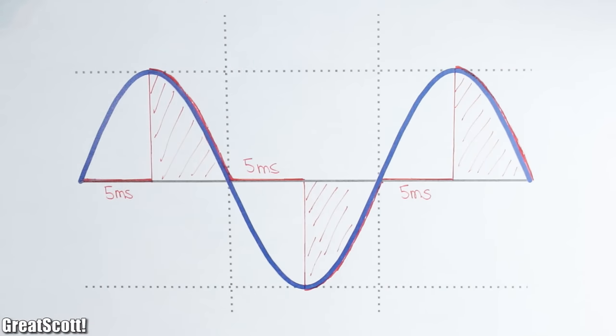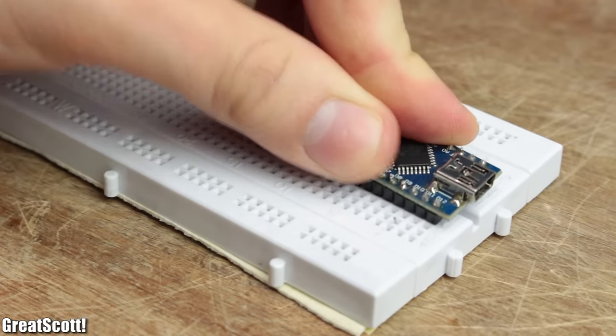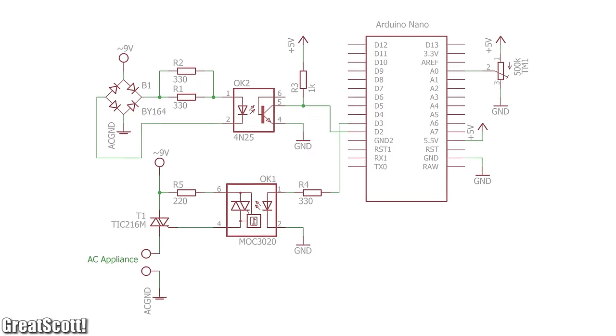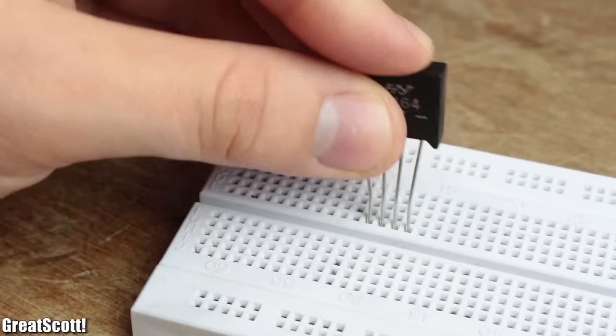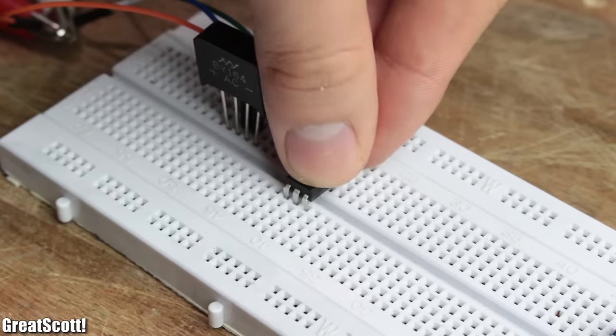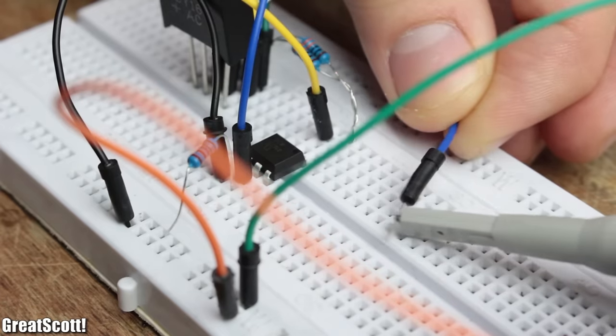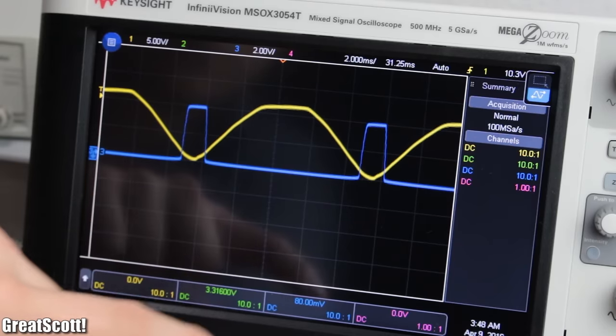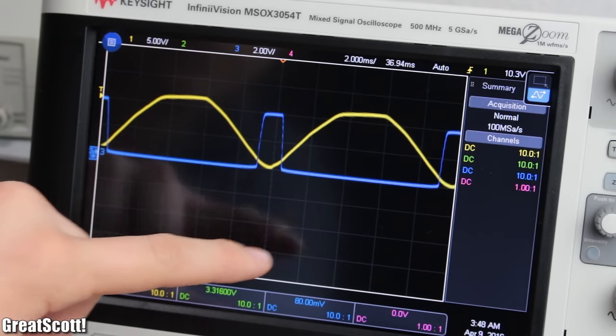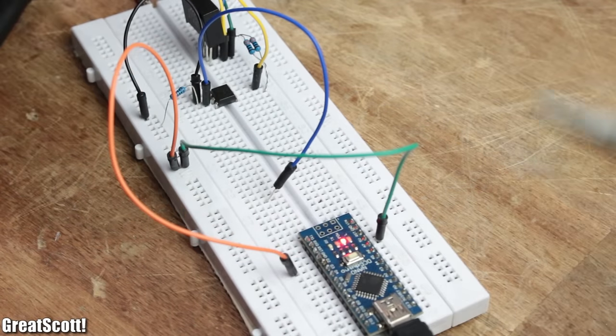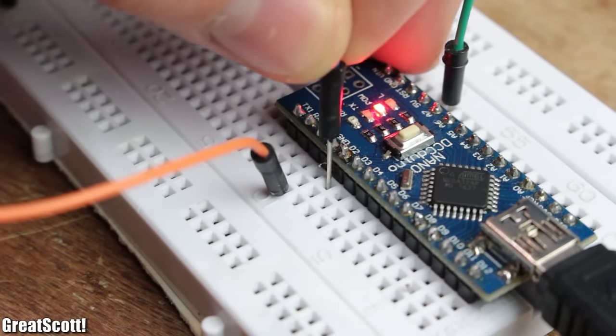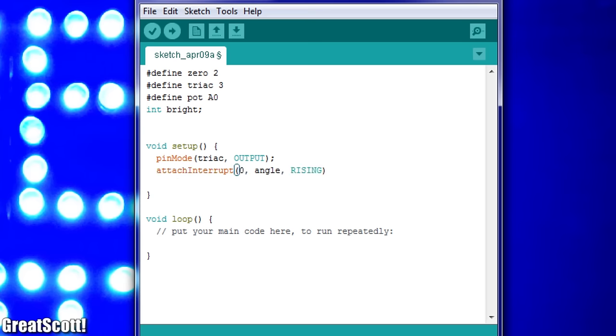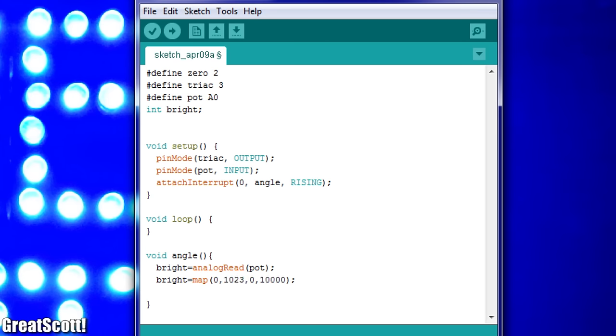But in order to solve the first problem and control each half-wave by letting only a part of it through the triac, we need a bit of microcontroller support. For that I firstly created a theoretical schematic and began by using a full bridge rectifier with an optocoupler in order to create a voltage burst whenever a zero point of the AC signal is reached.